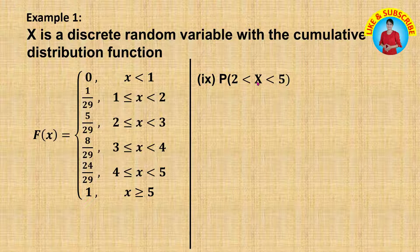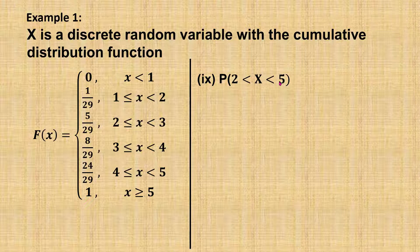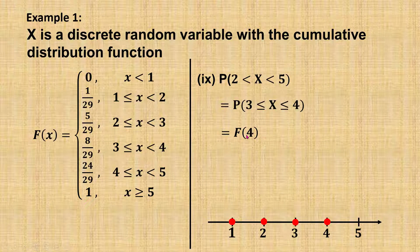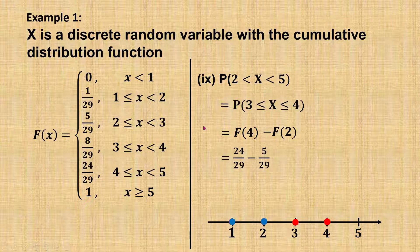Find the probability when x is greater than 2 and less than 5. Since 2 and 5 are not included, this equals the probability x greater than or equal to 3 and less than or equal to 4. The probability equals F(4) minus F(2), keeping x equals 3 and x equals 4. F(4) equals 24 over 29 and F(2) equals 5 over 29. So the answer is 19 over 29.